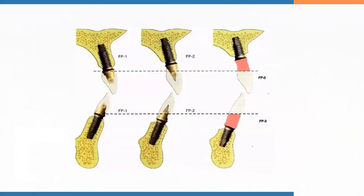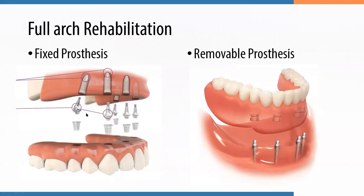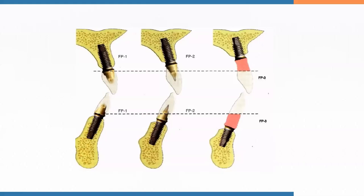For the fixed prosthesis approach, according to Dr. Carl Misch, we have three classifications: FP1, FP2, and FP3. An FP1 restores the clinical crown when the patient has good vertical bone height. FP2 is where the bone is a bit more compromised with significant vertical bone loss — that prosthesis restores the clinical crown and part of the coronal third of the root. In FP3, which has adequate bone loss and insufficient vertical height, the prosthesis restores the clinical crown and the gingiva.